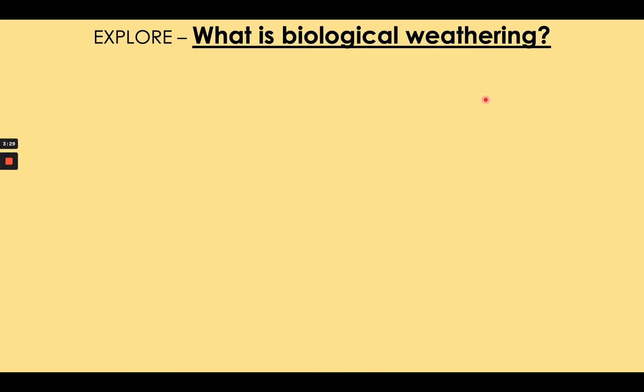The first idea is how do rocks break without moving? This is all to do with something called weathering. Weathering is a process in which rocks are broken down in situ — that's I-N space S-I-T-U — which means without being moved. There are three ways in which weathering can happen to rocks, in which they can be worn down.